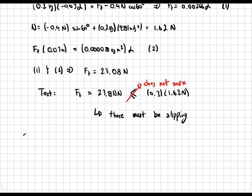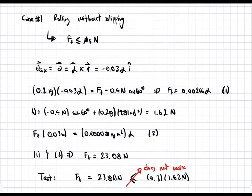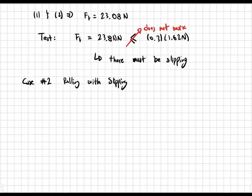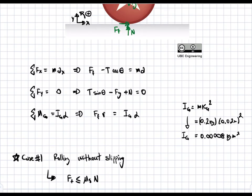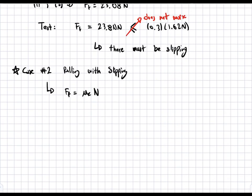That leads us to Case 2: Rolling with slipping. Instead of using the static friction coefficient, we use the kinetic friction coefficient. What holds here is that F_F equals μ_k times N. We plug this back into all three equations, replacing F_F. We're now solving for alpha, the normal force N, and the linear acceleration a — three equations and three unknowns, so we can solve directly.